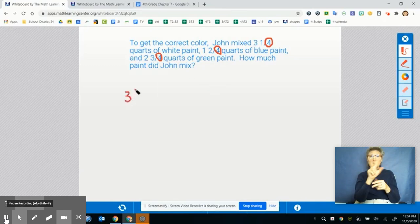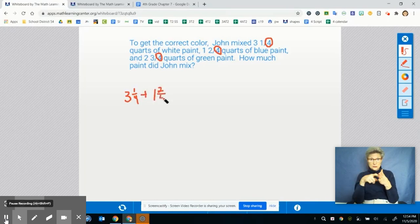So in this case, we have three and one-fourth. So I'm going to rewrite out what I'm working with. So I have three and one-fourth plus one and two-fourths. And again, notice how all of the denominators are the same. So this is going to make it really easy to use mental math. And then finally, plus two and three-fourths.